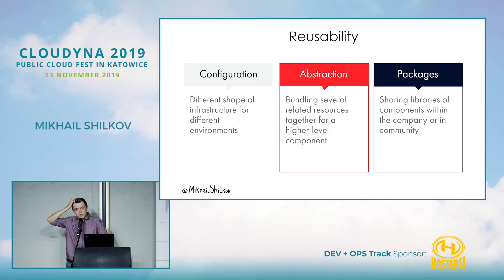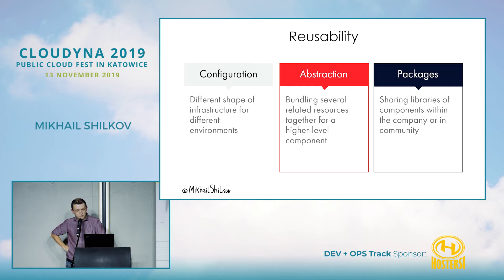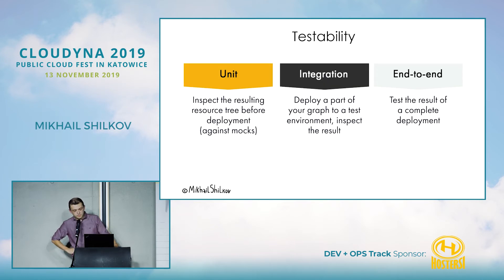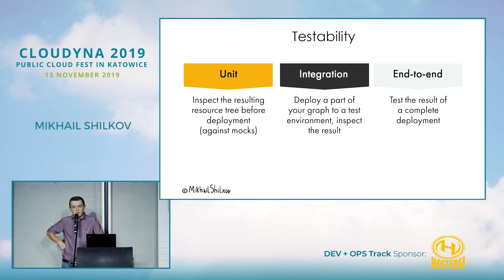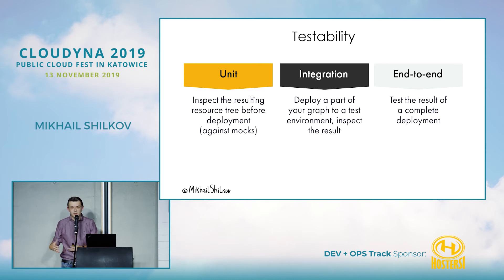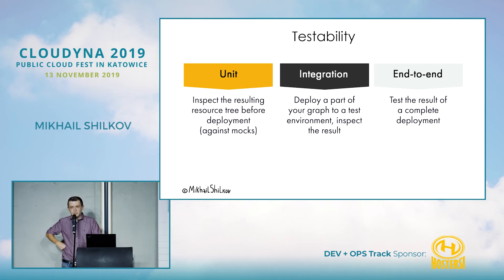More problems on top of that: if you want to use the same set of templates for multiple environments with different shapes — say, a test environment that's a much more scaled-down version of production — that's quite hard to do with markup languages. Building abstractions is difficult; Terraform has modules, but they're not really great yet. The best way to test your resources today is to deploy your infrastructure to a test environment and see what happens. Ideally, I'd want to test the shape of the resource graph before starting deployment — unit testing, integration testing, end-to-end testing, like in the developer world.